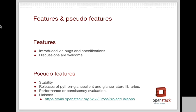If you think of Glance in two ways — one is features, another aspect being pseudo-features — features are the new and cool things added to the services quite often. They can be introduced via bugs, but more often they are introduced via specifications. We encourage you to go via the route of specifications. However, sometimes it might just be more convenient and less of a time hassle if a bug has been filed against the proposed change. Of course, discussions are welcome on all fronts, so please be involved.